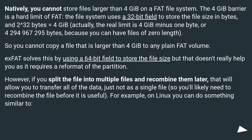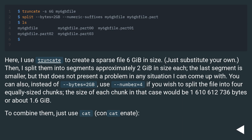For example, on Linux you can do something similar. Here, I use truncate to create a sparse file 6GB in size — just substitute your own. Then I split them into segments approximately 2GB in size each.